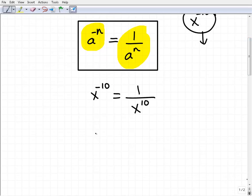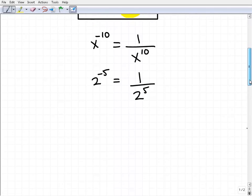Let's take a look at another one. Let's use a number this time. It doesn't make a difference if you're using a variable or a number. As long as it's a base to a negative exponent, this rule applies. If I have 2 to the negative 5th, that would be simply 1 over 2 to the 5th. Pretty easy.